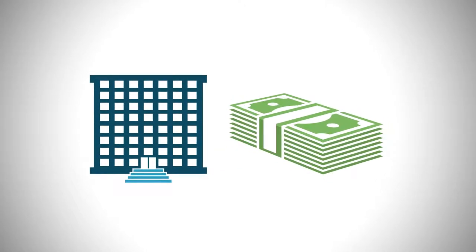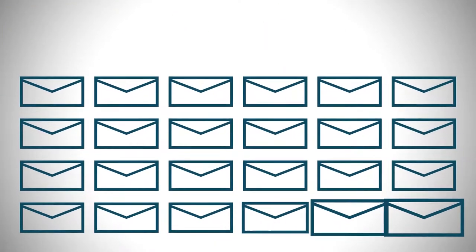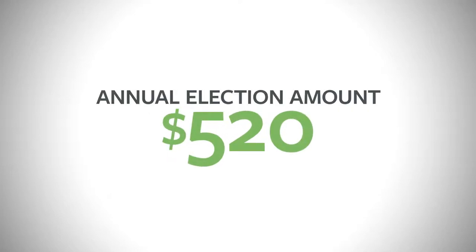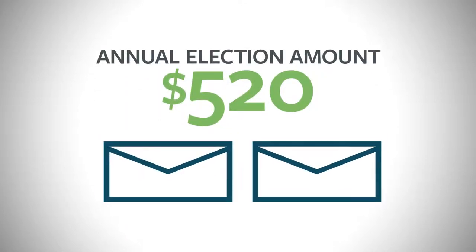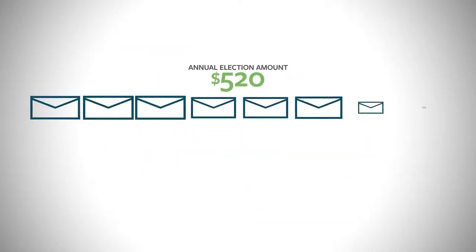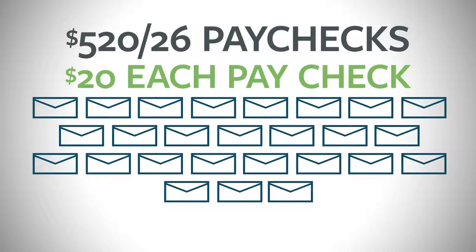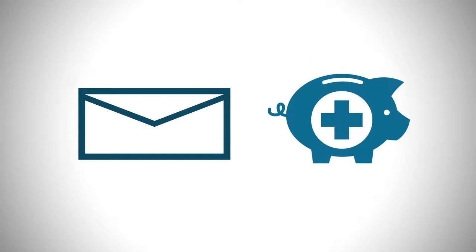Then, your employer will use the amount you decided to set aside in your FSA for the year and divide that amount by the number of paychecks you receive in the plan year. For example, let's say that you want to set aside $520 as your annual election and you get paid on a biweekly basis. Your employer will divide $520 by 26 paychecks, which is $20 each paycheck. That amount will be deducted from your paycheck on a pre-tax basis.